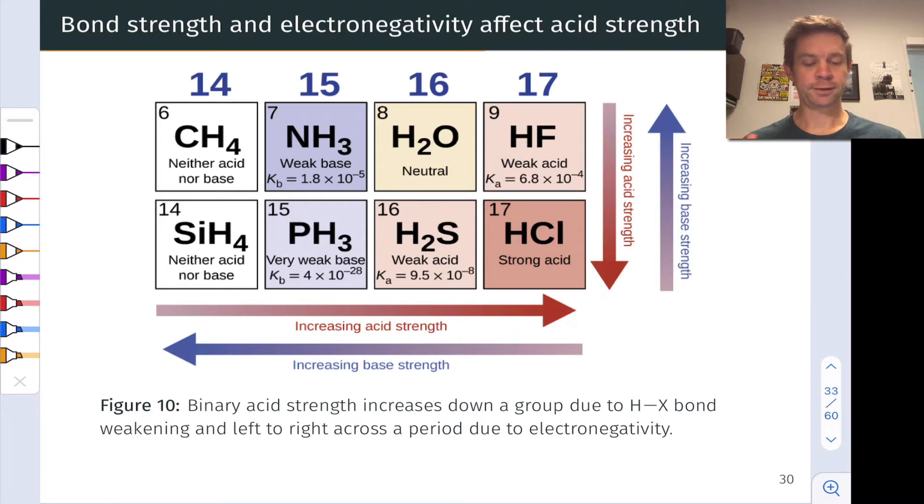And what we can see from the figure here is that acid strength increases as we move down a group. So HCl is a stronger acid than HF, for example. H2S is a stronger acid than H2O. And acid strength increases moving left to right across the periodic table. So H2O, for example, is a much stronger acid than CH4. And the Ka values listed here and the Kb values listed here give you a sense of the acid and base strength.